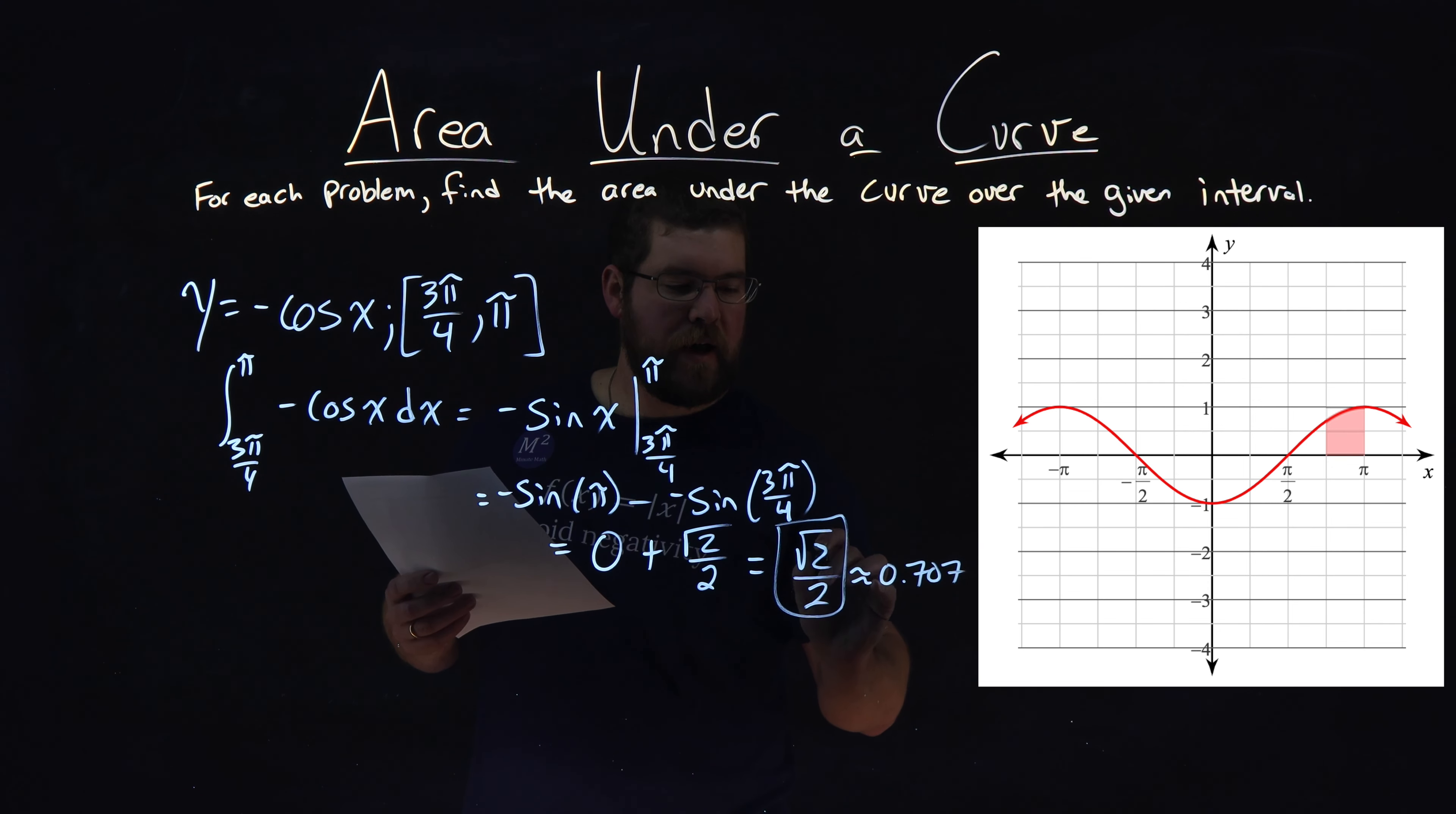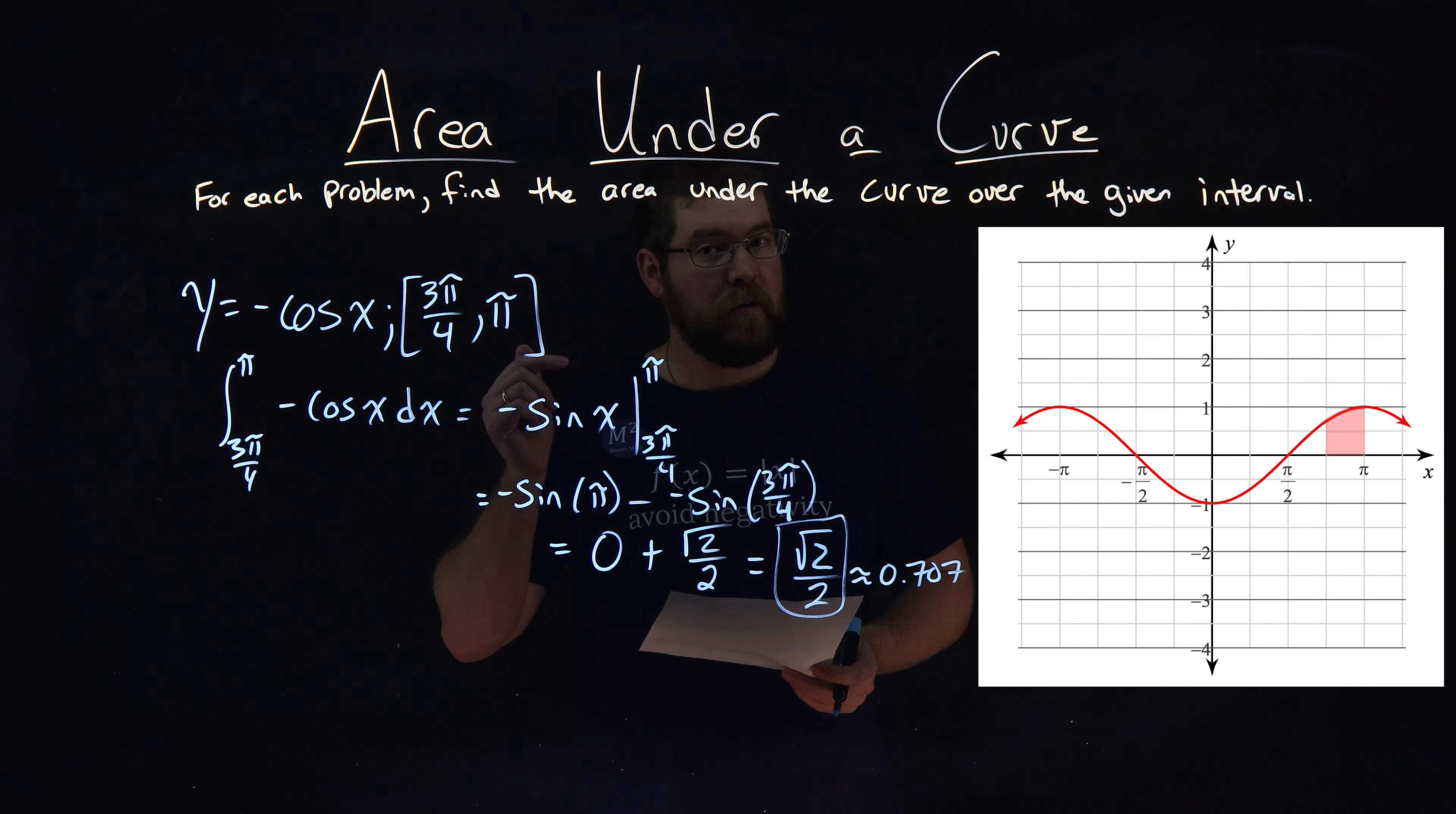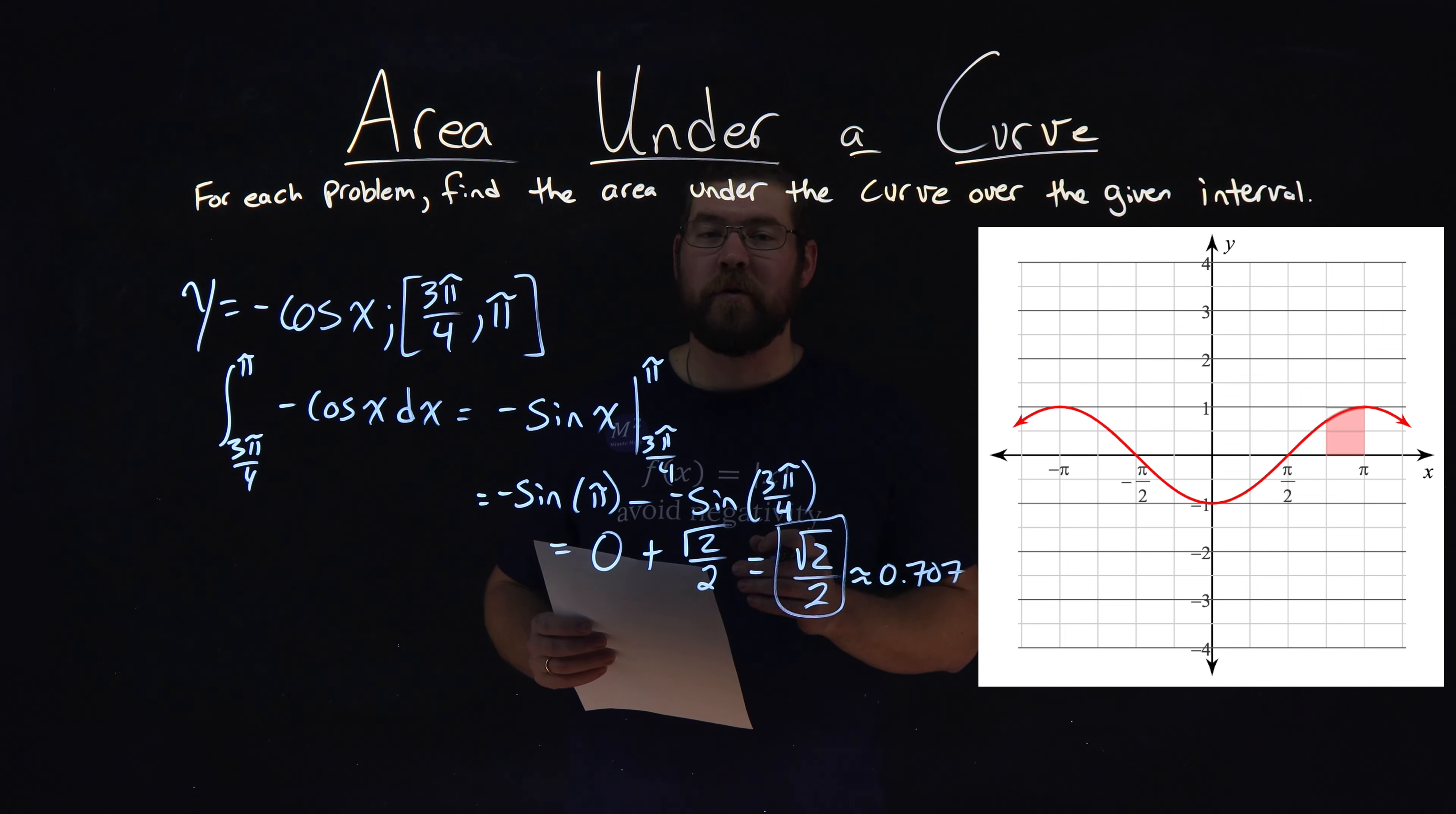Either way, we have our final answer here for the area under the curve of negative cosine of x on the interval from 3π over 4 to π is square root of 2 over 2.